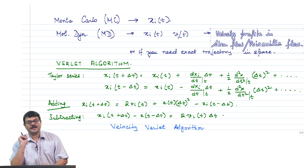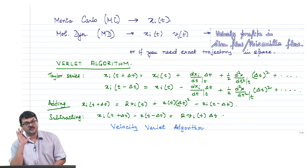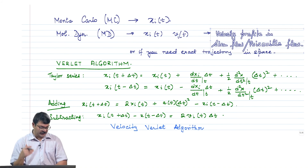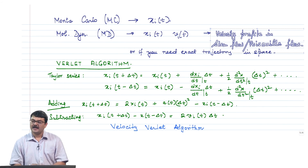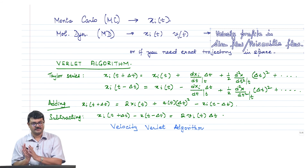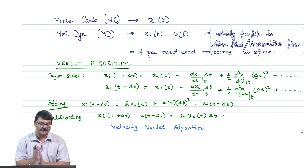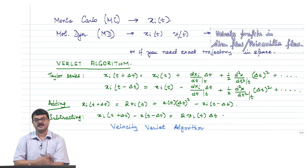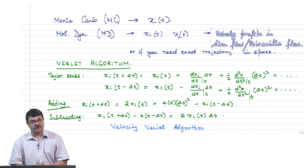Even for statistical systems like solid-liquid-gas, if you need to understand the velocity degree of freedom — for example, the velocity profile of a fluid in shear flow or Poiseuille flow — you cannot do Monte Carlo; you must do molecular dynamics. Monte Carlo is faster and gives statistical properties faster, but if you want dynamical properties or to study relaxation from a non-equilibrium to an equilibrium system, you would typically do molecular dynamics. One can also look at dynamics using Monte Carlo at times, but you do not have access to the velocity degree of freedom.